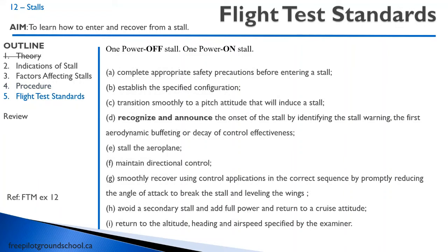For your recreational pilot flight test and your private pilot flight test, you will have to demonstrate two stalls: a power-off stall and a power-on stall. You're going to do a HASEL check and establish the configuration as directed by the flight test examiner. You will have to establish a pitch attitude that will induce a stall, and then announce to the examiner that there's a stall — just say 'stall' — so the examiner knows you can identify the warning signs such as wing buffet or the nose dropping. Then maintain directional control using only the rudder, never the ailerons, and smoothly recover: lower the nose to a gentle nose-down attitude, apply full power, raise the flaps as required, and return to cruise.